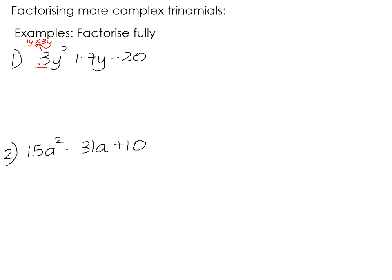We also know that the last term of the trinomial, we get by multiplying the two last terms in the bracket. And to get 20, those last terms could have possibly been a 1 and a 20, a 2 times a 10, or a 4 times a 5. And it's our job to work out which pair of factors we will use so that we get a positive 7 in the middle term.